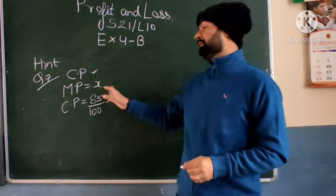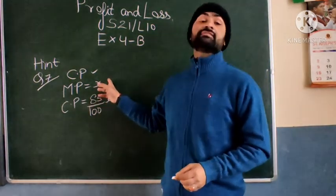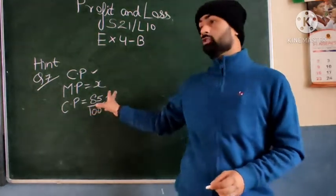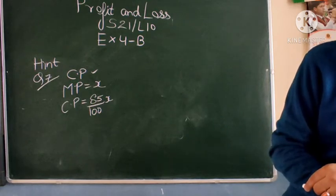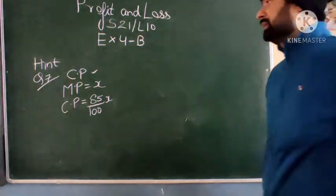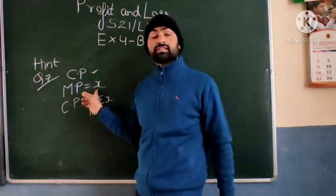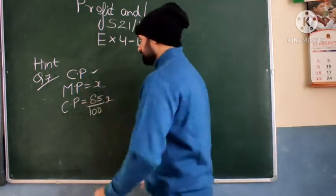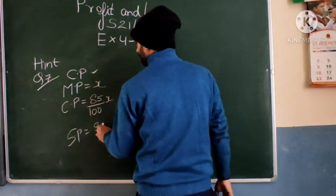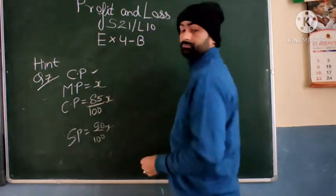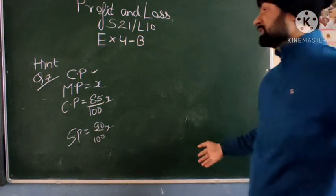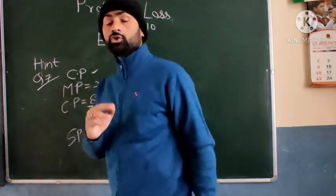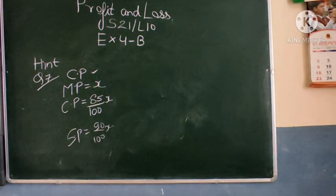15 percent below mark price means CP is 85 percent of the mark price. Let X be the mark price. You can equate CP = 85% of X and get the value of mark price. Then the question says if the article is sold at a discount of 10%, then once you have calculated the mark price, with a 10% discount the selling price is 90% of X. Once you have got mark price and selling price, you can get CP too, and then use your formula for calculating profit percent.